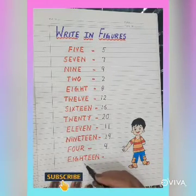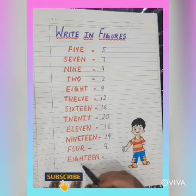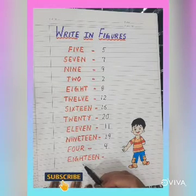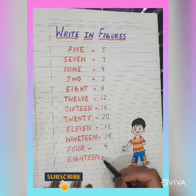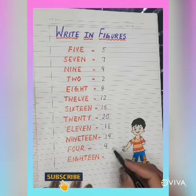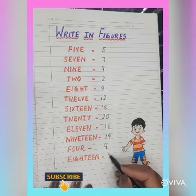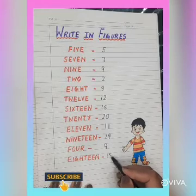Now the next number name is E, I, G, H, T, W, E, N — 18. So we will write here 18.